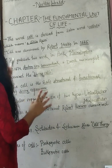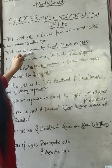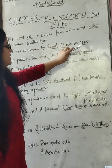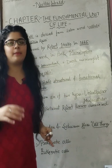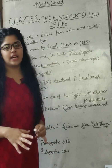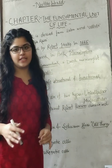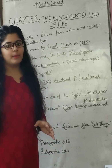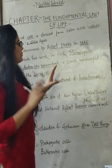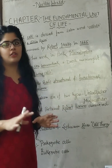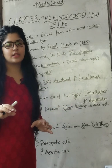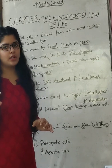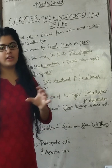The second point is: the cell was discovered by Robert Hooke in 1665. The main point is that he discovered dead cells in the body of a cork, and also in the onion slice.